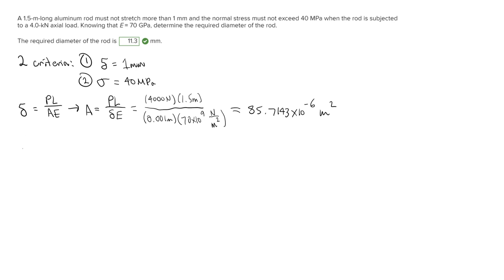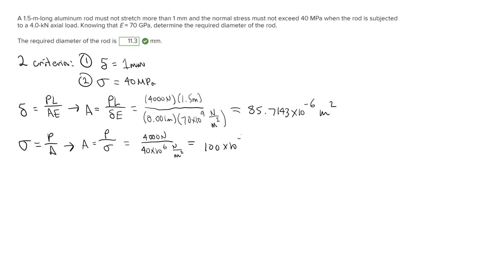Now solving for a second area based on normal stress. The formula for normal stress is σ = P/A, so rearranging gives A = P/σ. Using P = 4000 newtons and normal stress = 40 megapascals = 40×10⁶ pascals, where 1 pascal = 1 N/m², we get A₂ = 100×10⁻⁶ m².